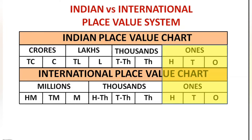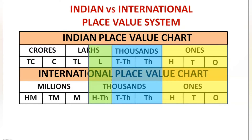If you observe, the ones period in the Indian place value chart is totally the same as the ones period in the international place value chart. The thousands period in the Indian place value system is the same as only the thousands and ten-thousands place values in the international place value system.